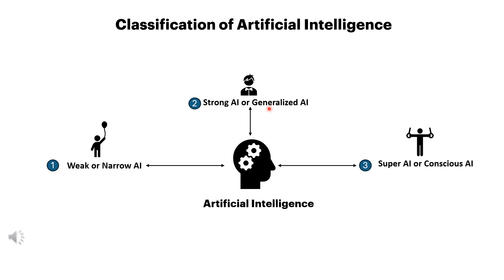An AGI system could also compose a song all by itself. Super AI or conscious AI is AI with human-level consciousness, which would require it to be self-aware. Artificial superintelligence is a hypothetical level of AI that surpasses human intelligence in every aspect, including creativity, emotional understanding, and problem-solving. It represents an intelligence level far beyond the capabilities of the smartest humans.